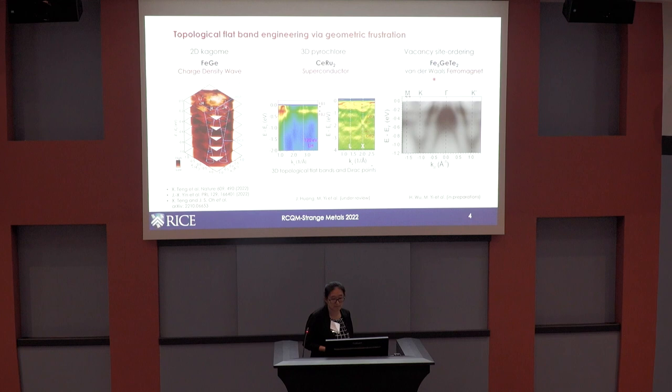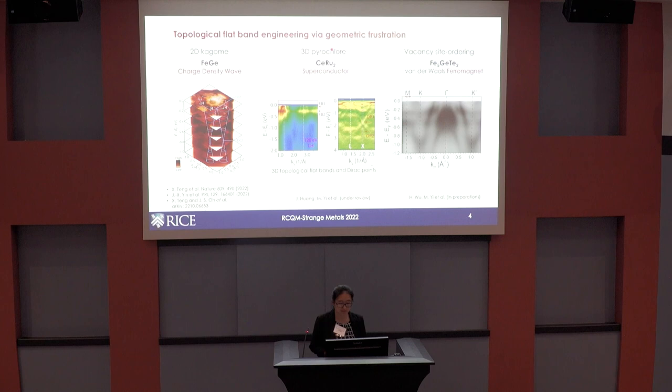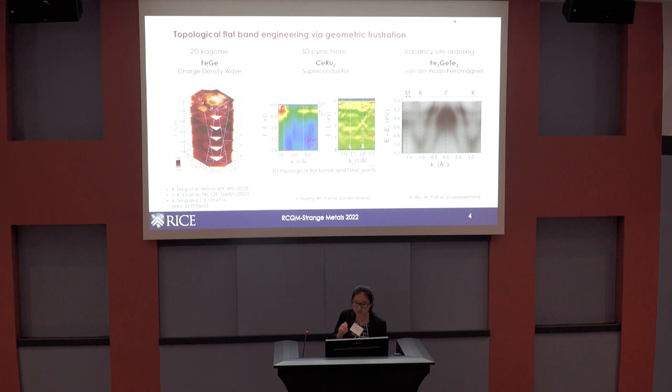If we carry out tight-binding calculations considering nearest-neighbor hopping, we can get flat dispersions for all these cases. Of course in real materials the band dispersions are much more complicated. The three systems we've looked at are: iron germanium, a 3D pyrochlore lattice, and finally the Van der Waals near-room-temperature ferromagnet Fe₅GeTe₂ (FGT), where we see switching between two topologically distinct phases.